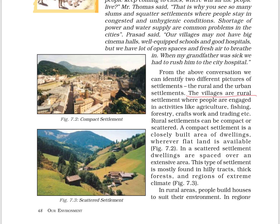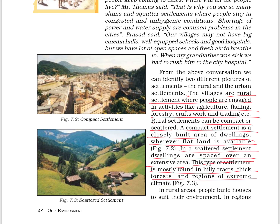Villages are the rural settlements where people are engaged in activities like agriculture, fishing, forestry, craft work, and trading. Rural settlements can be compact or scattered. A compact settlement is a closely built area of dwellings wherever flat land is available. In a scattered settlement, dwellings are spaced over an extensive area, mostly found in hilly tracts, thick forests, and regions of extreme climate.